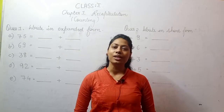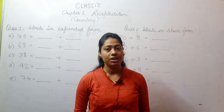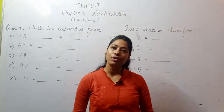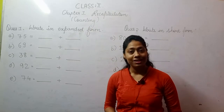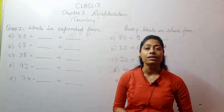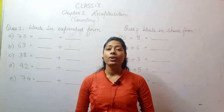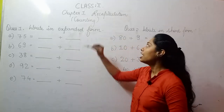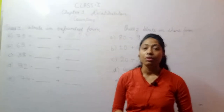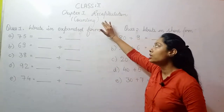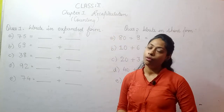Hello students and welcome back to Roshi's Education Point. Today we will be starting with a new book of class 2nd. The name of that book is Perfect Composite Mathematics. We will be doing chapter 1 today. The name of the chapter is Recapitulation, and in this chapter today we will be talking about Counting. Counting is the first exercise of this book.